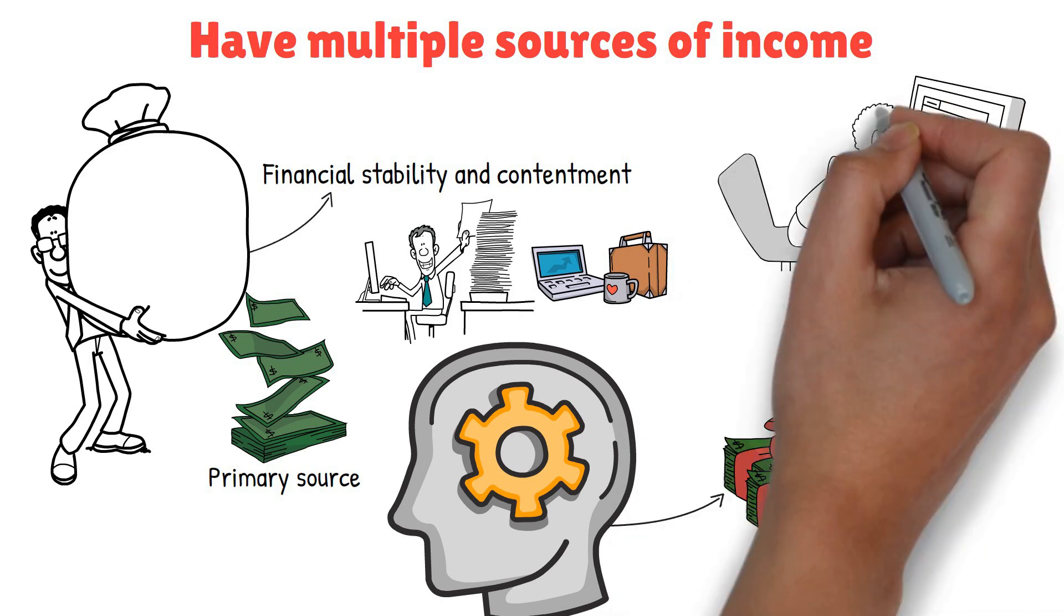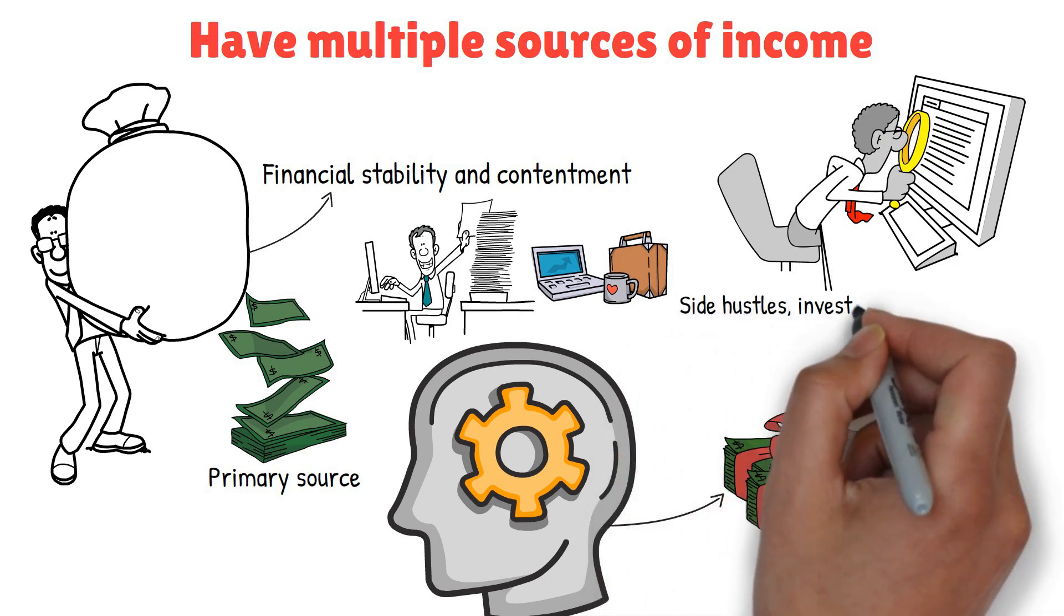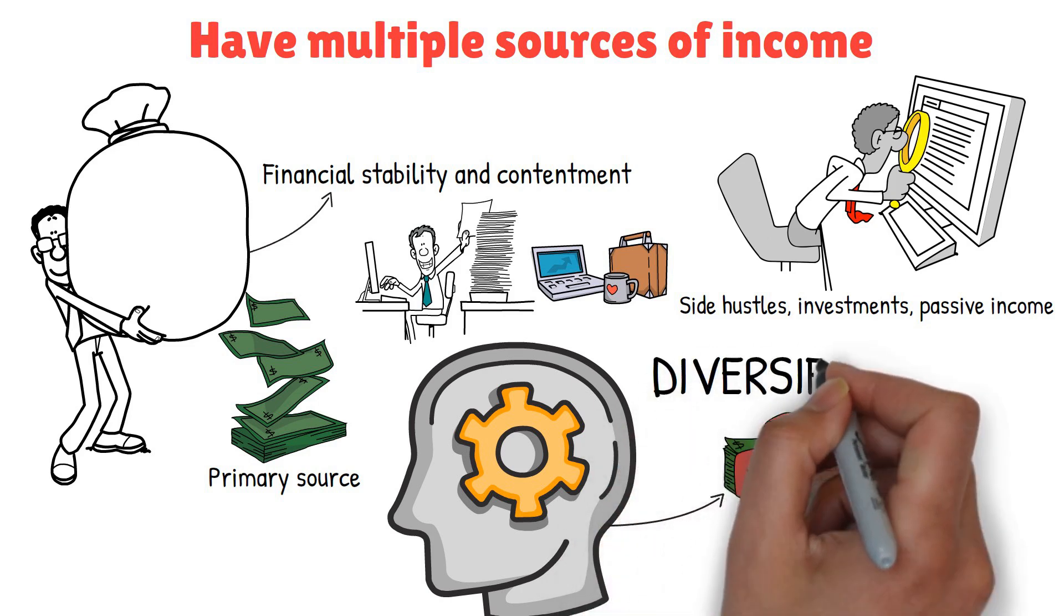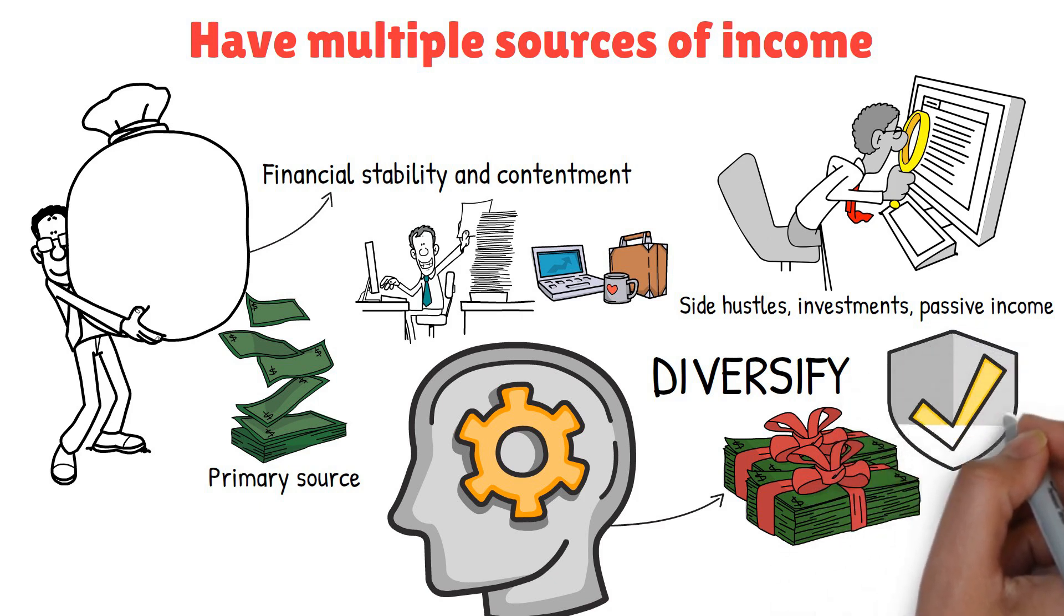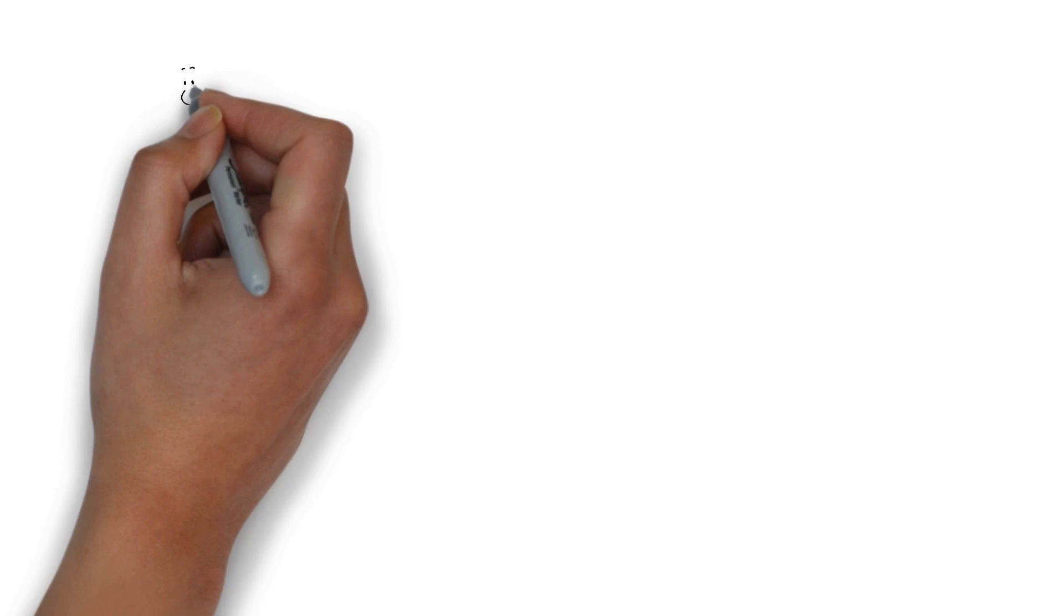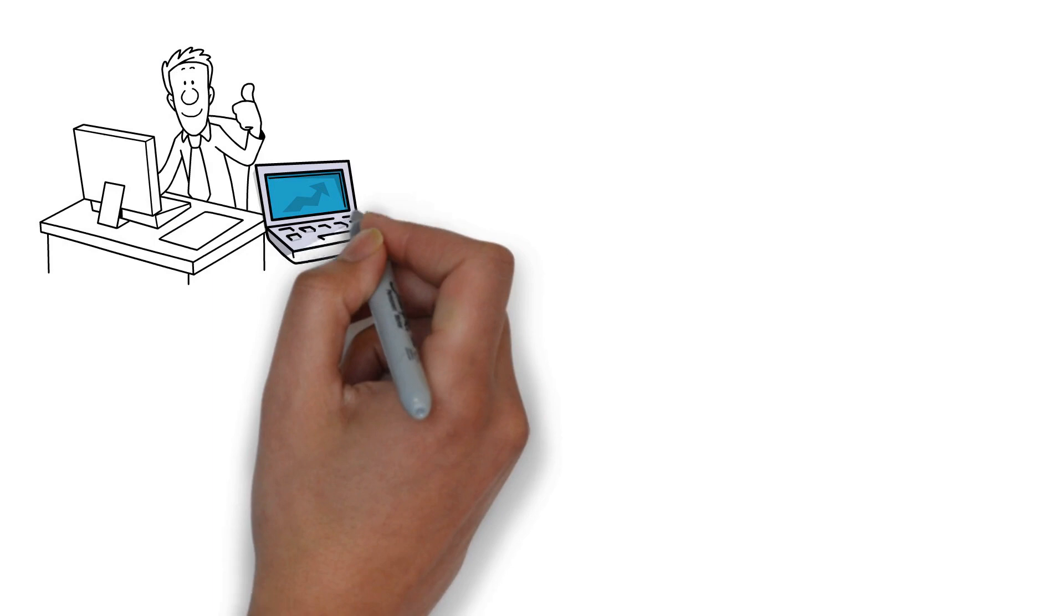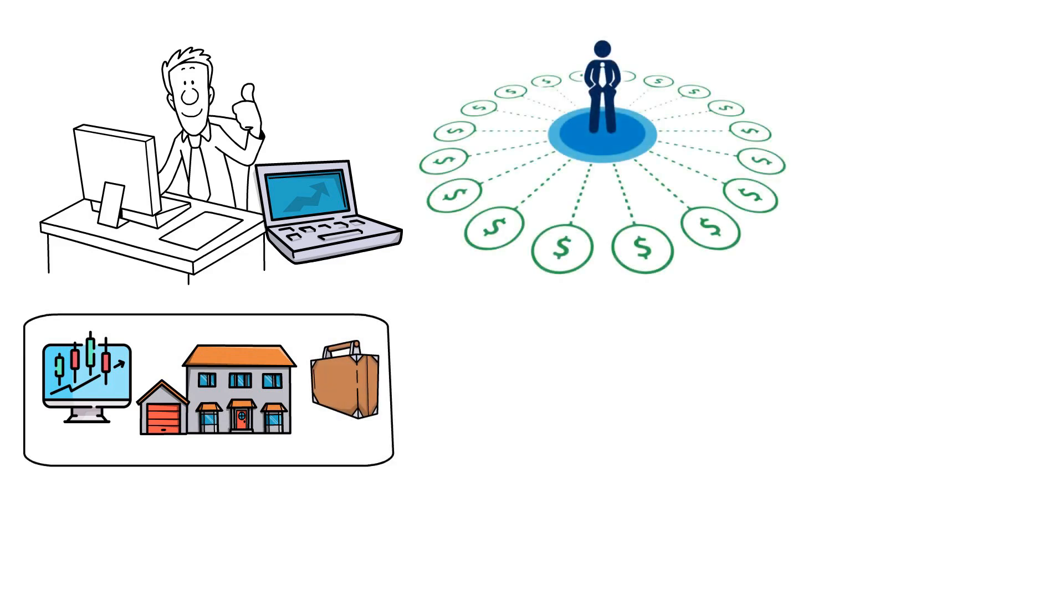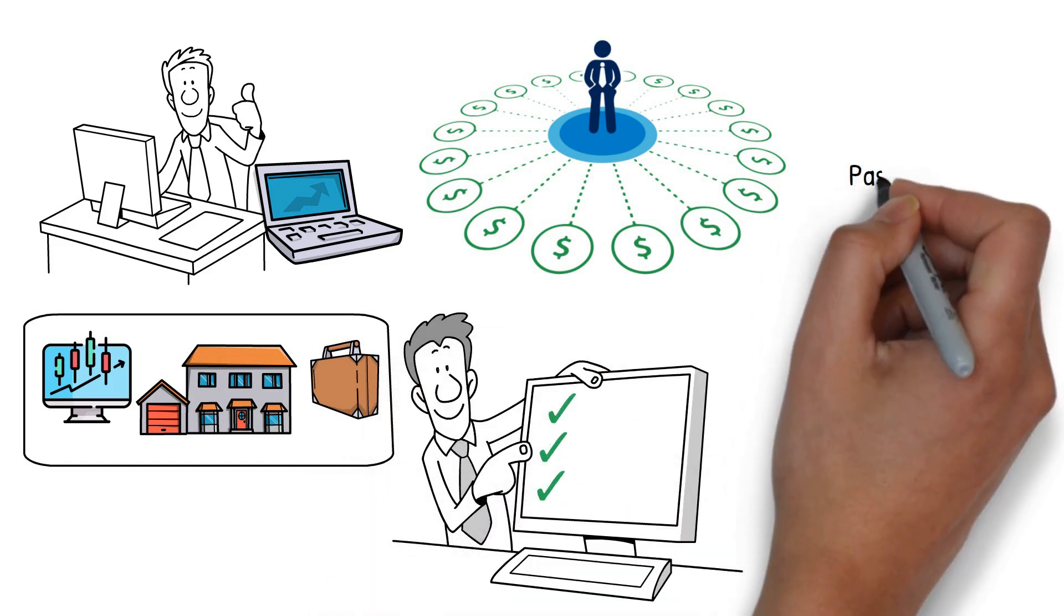Once you've established one source of income, the next step is to look for other ways you can make money. This could be through side hustles, investments, or passive income opportunities. The idea is to diversify your income streams so that you're not reliant on just one source. This not only provides financial security, but also reduces the anxiety and stress associated with depending on a single paycheck. For instance, you might have a full-time job and decide to start a freelance gig on the side. Maybe you have some savings that you can invest in stocks, real estate, or a small business. The more sources of income you have, the more stable your financial situation becomes. It also gives you the flexibility to meet your needs without putting yourself or others in harm's way.